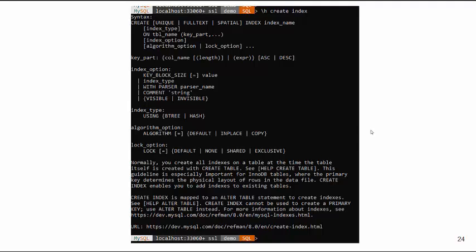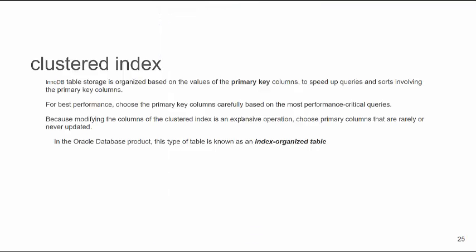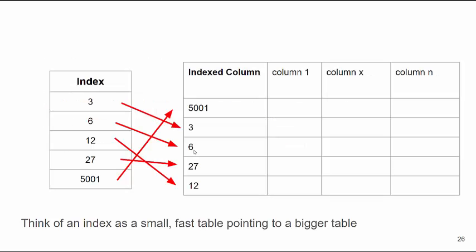There are many types of indexes. Looking at the syntax: CREATE UNIQUE, FULLTEXT, SPATIAL — you can name the index and set various options. MySQL uses what they call a clustered index, where the table storage is organized on the values of the primary key. You want a primary key. For best performance, choose the primary key columns carefully based on the most performance-critical queries. Modifying columns of a clustered index is very expensive, so changing your primary key can get pretty nasty. If you're an Oracle DBA, you probably know this as an index-organized table.